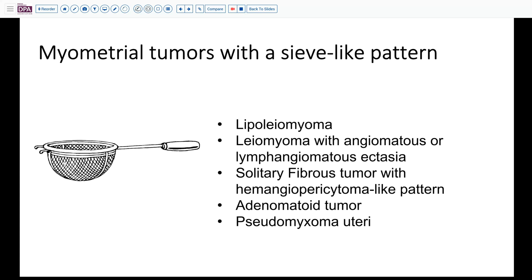In tissue, things that give you that clear space with a mesh-like appearance are things like lipoleiomyoma, which can occur in the myometrium — especially if you have a high fat content lesion, that could give you a sieve-like pattern. But certainly that doesn't fit with what we were seeing in terms of the cuboidal cells and so forth. We could think about a leiomyoma with angiomatous or lymphangiomatous ectasia as a possibility, in which case we'd want to see that the intervening cells had more smooth muscle characteristics rather than fibroblastic type features. A rare entity might be a solitary fibrous tumor, which would be quite unusual in the uterine corpus with a hemangiopericytoma-like pattern.